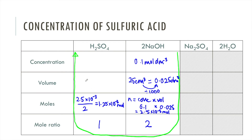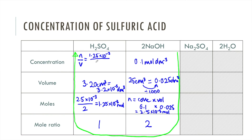The volume of sulfuric acid is what we measured from the burette: 3.20 centimetres cubed. Again we convert to decimetres cubed by dividing by 1000, giving 3.2 × 10⁻³ dm³. Concentration is calculated by dividing moles by volume: 1.25 × 10⁻³ ÷ 3.2 × 10⁻³ = 0.39 moles per decimetre cubed. That is the concentration of the sulfuric acid.